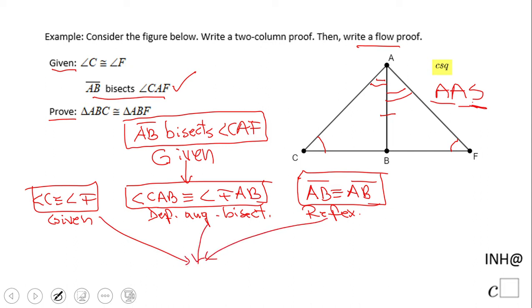Which would be triangle ABC congruent to triangle ABF. Be careful, this last statement needs to be in the correct order. And the reason for this is angle-angle-side. That is a flowchart, a flow proof for this problem.